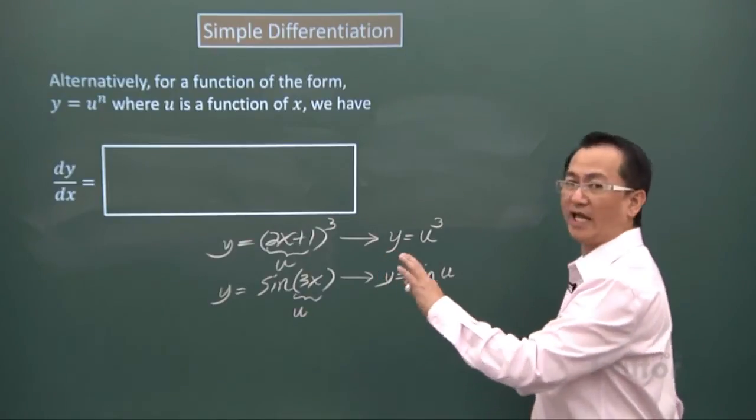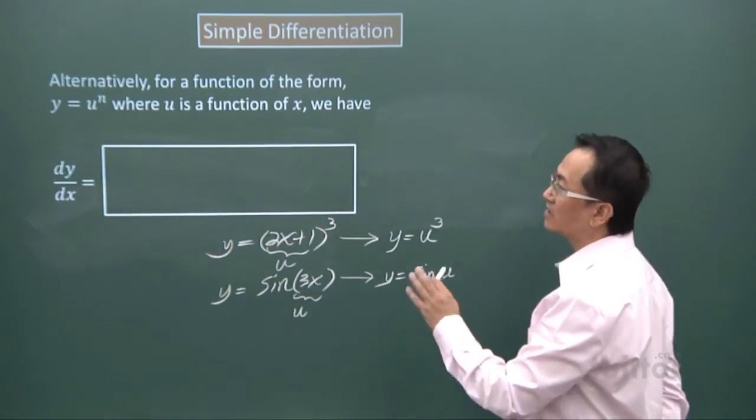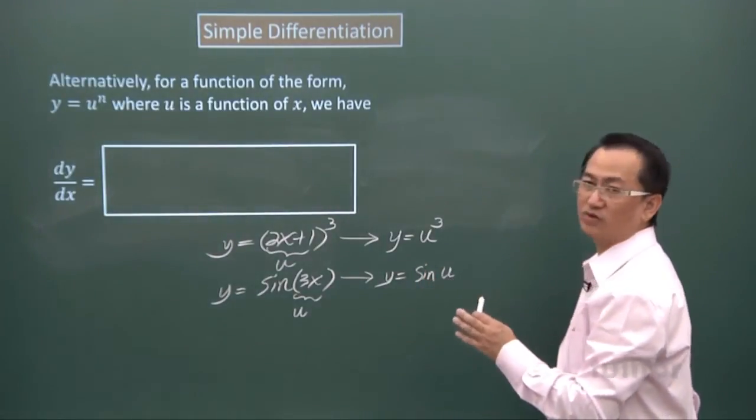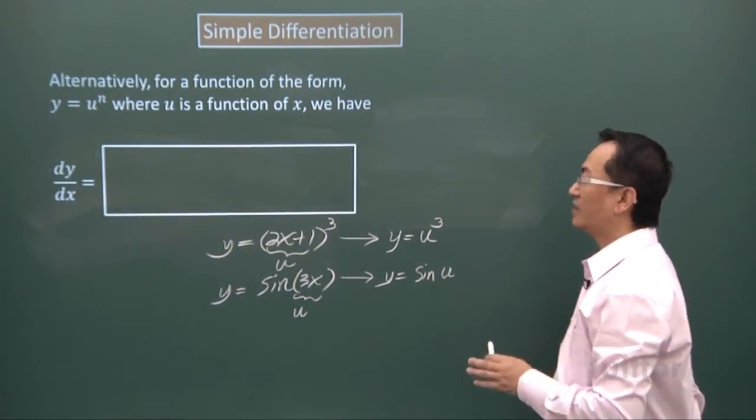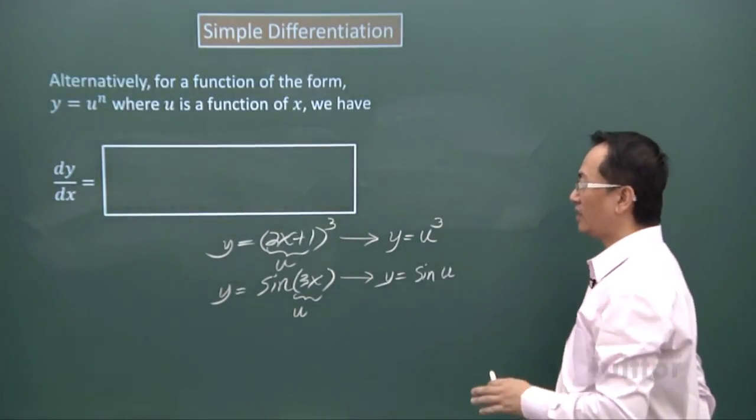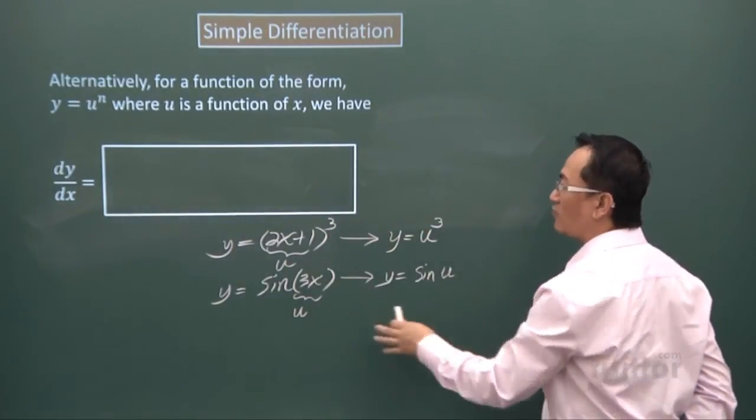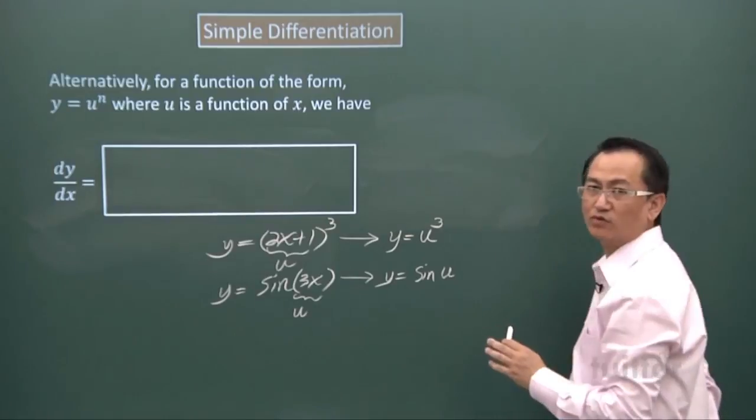Whenever you get an expression to differentiate, think in terms of y equals u to the power of n. Can you let something be u? If you can, and it's in this format, you can use the chain rule.